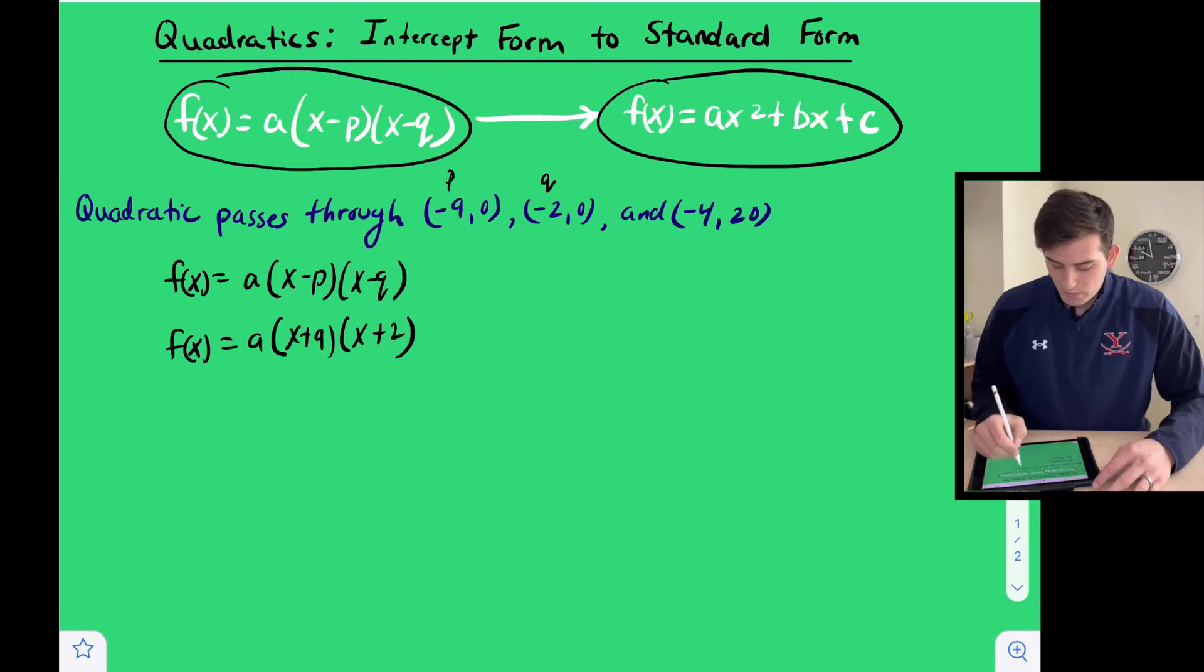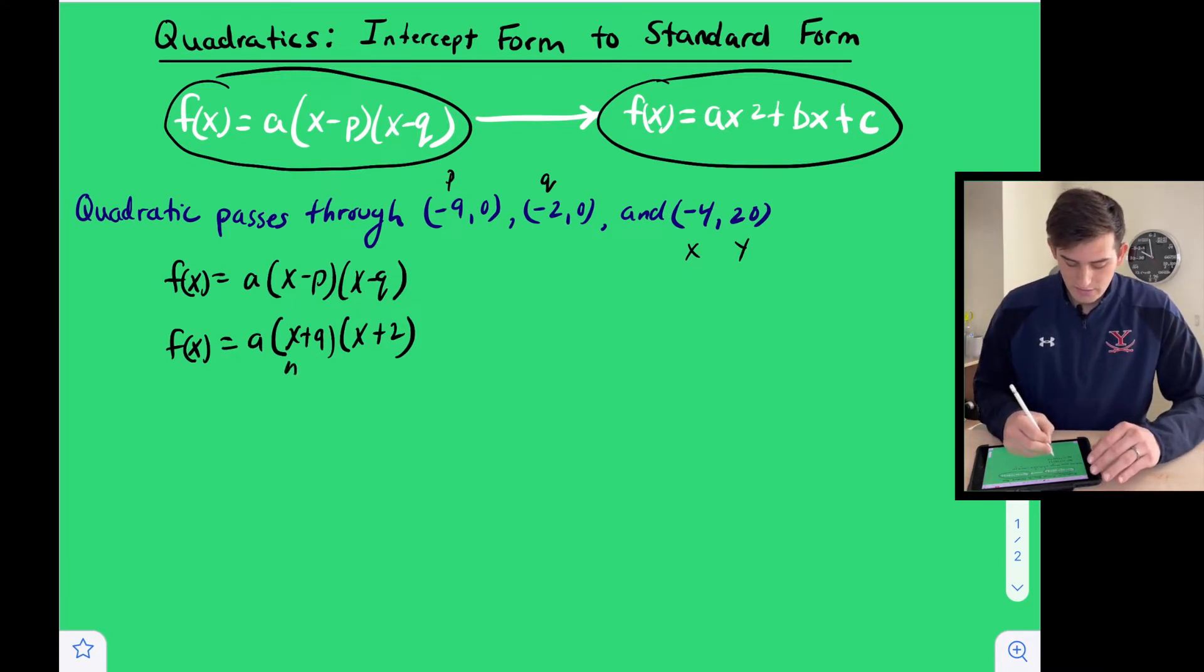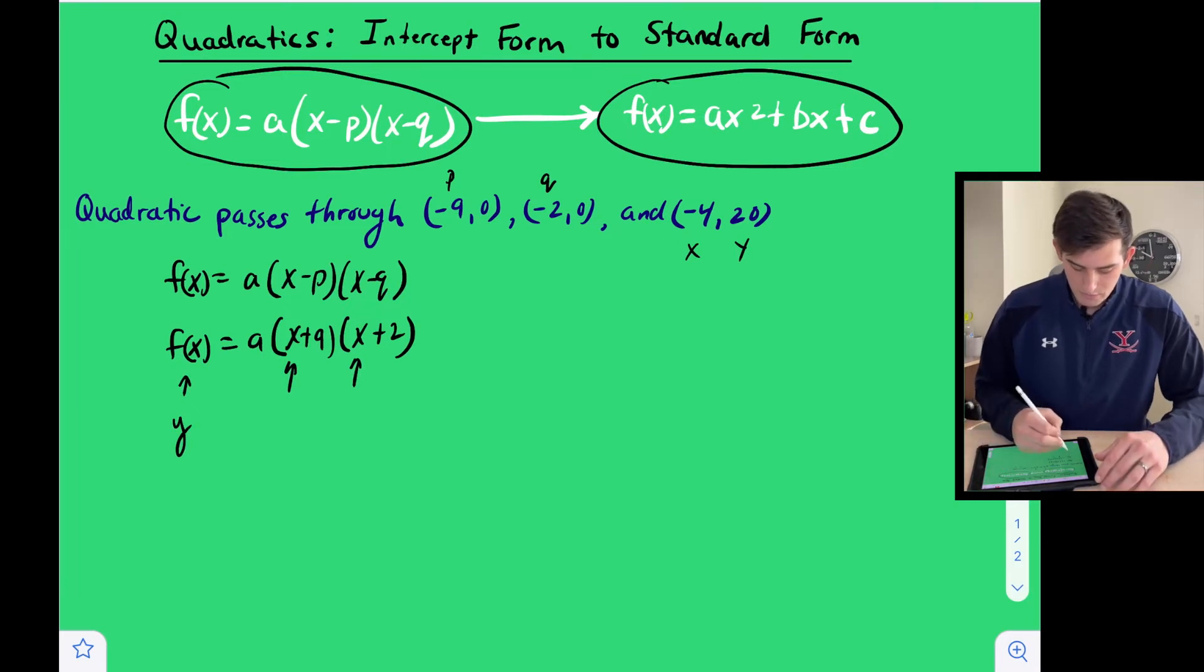So now we have this other point over here, which is just an x and a y. So in order for us to find the a value, we can plug in negative four for x, so here and there. And then we can plug in 20 for y, which remember y is the same as f of x. So when we plug those in, we have 20 is equal to a times negative four plus nine times negative four plus two.